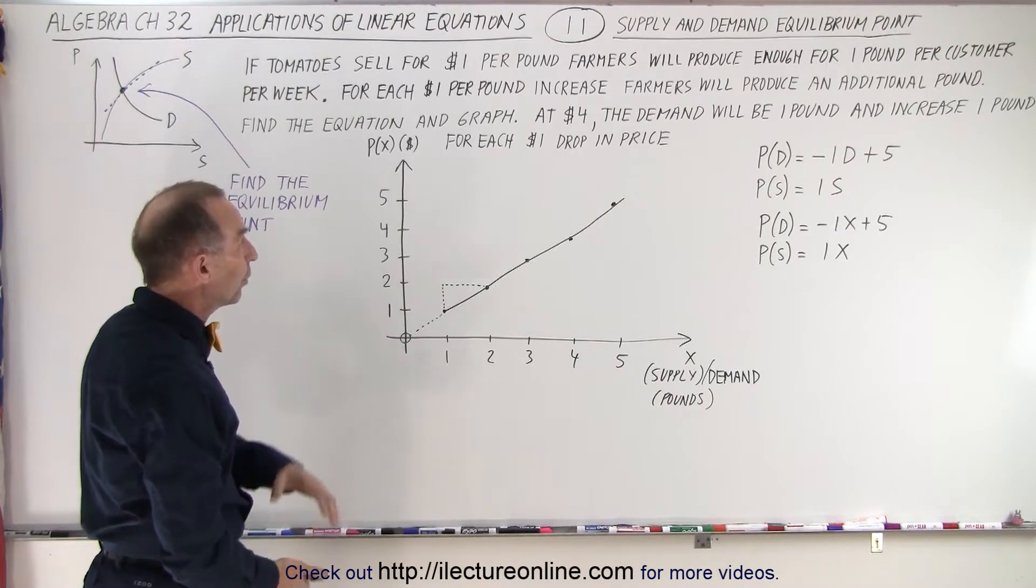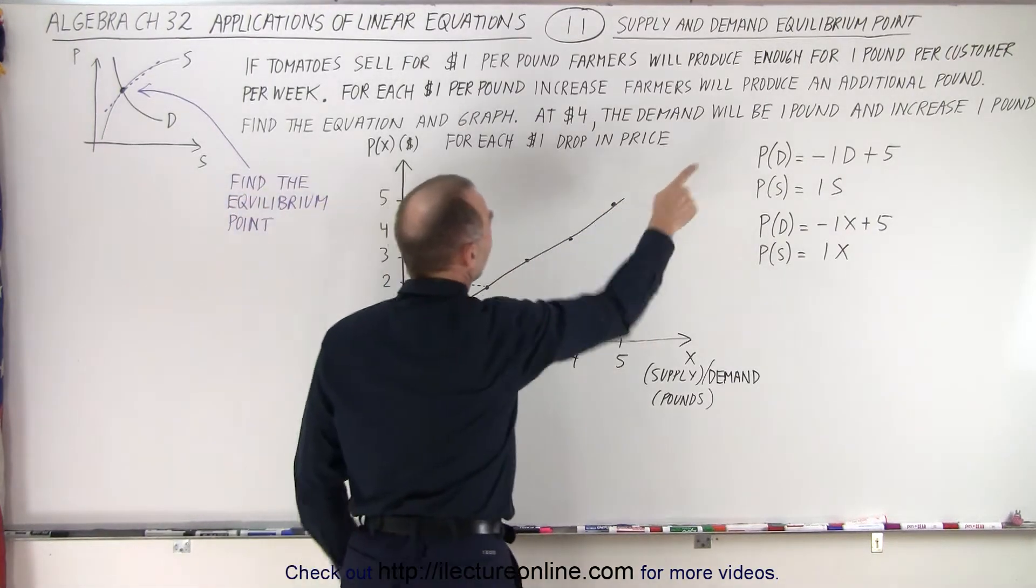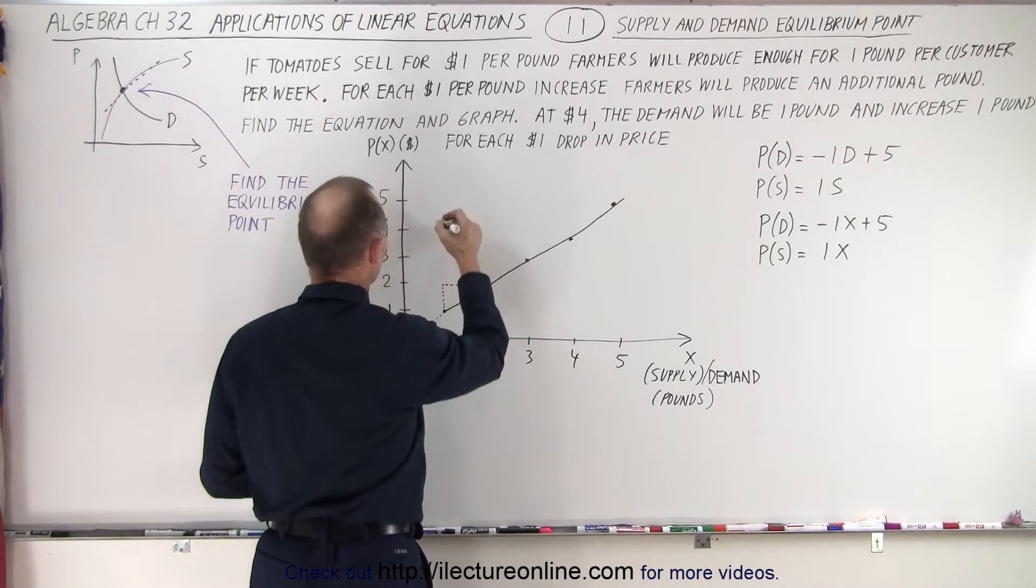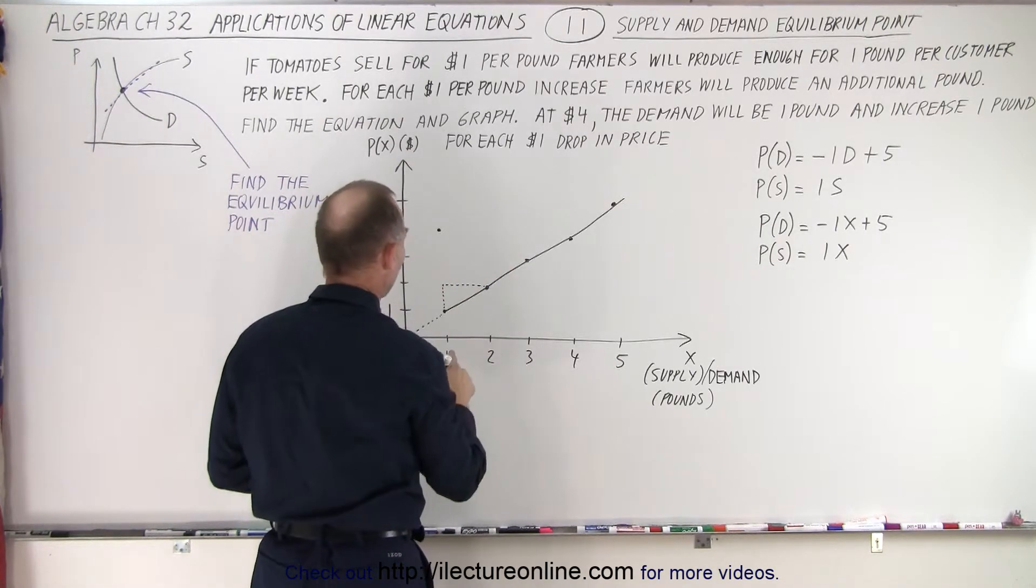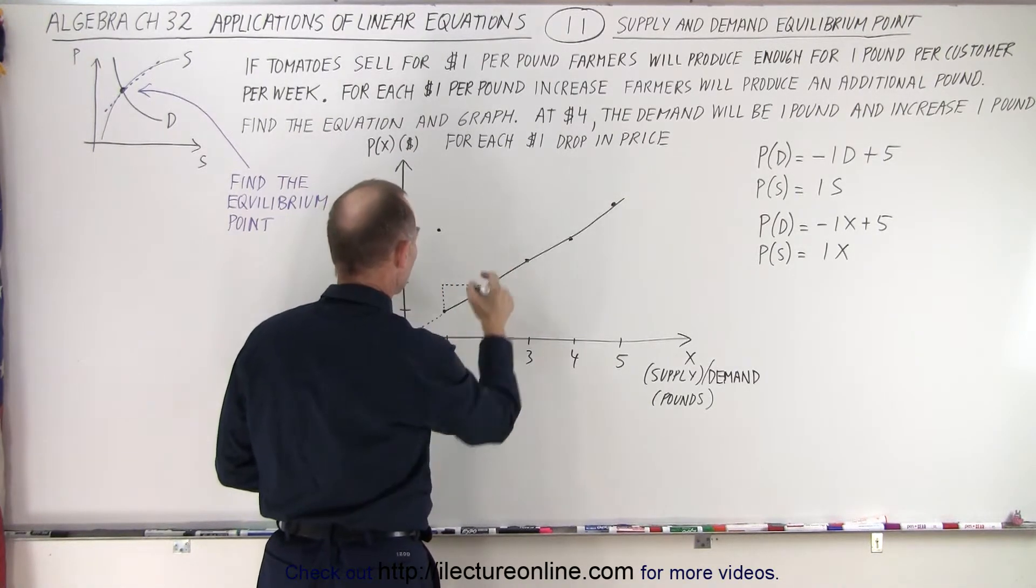And so here, going back to what we knew before, at $4, the demand will be one pound. So one pound at $4, that's right here, that would be the demand. At $3, the demand would be two.